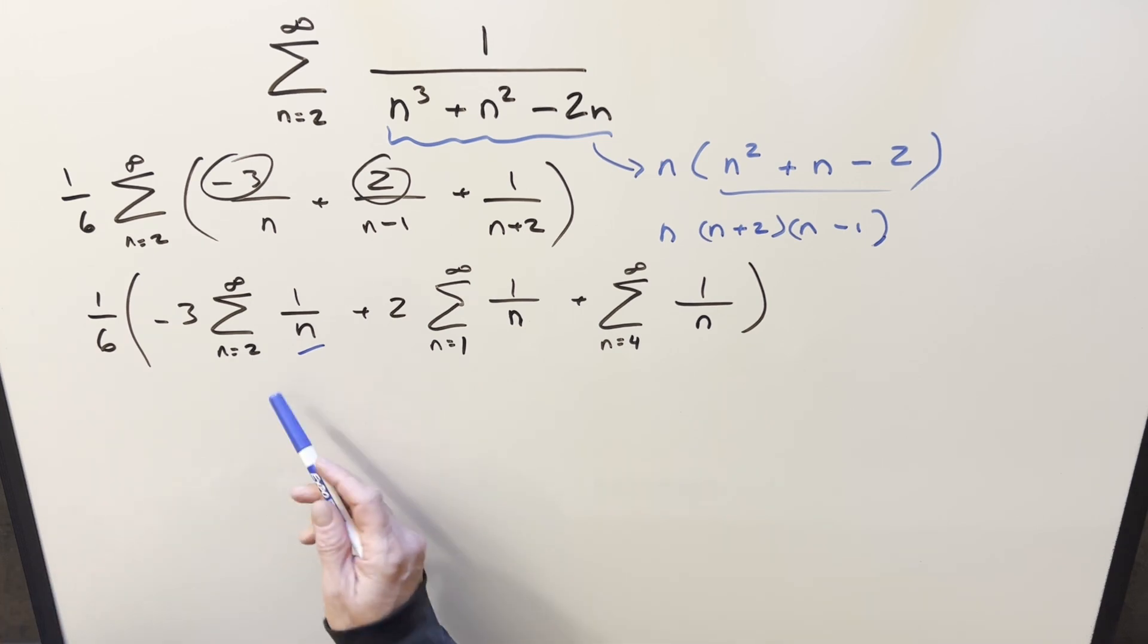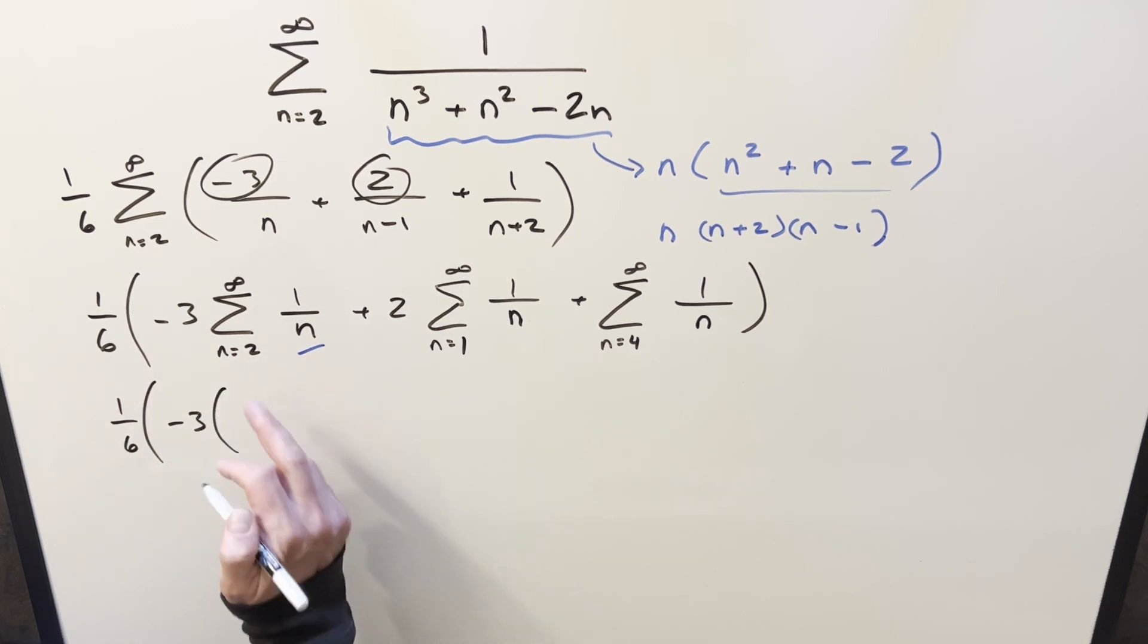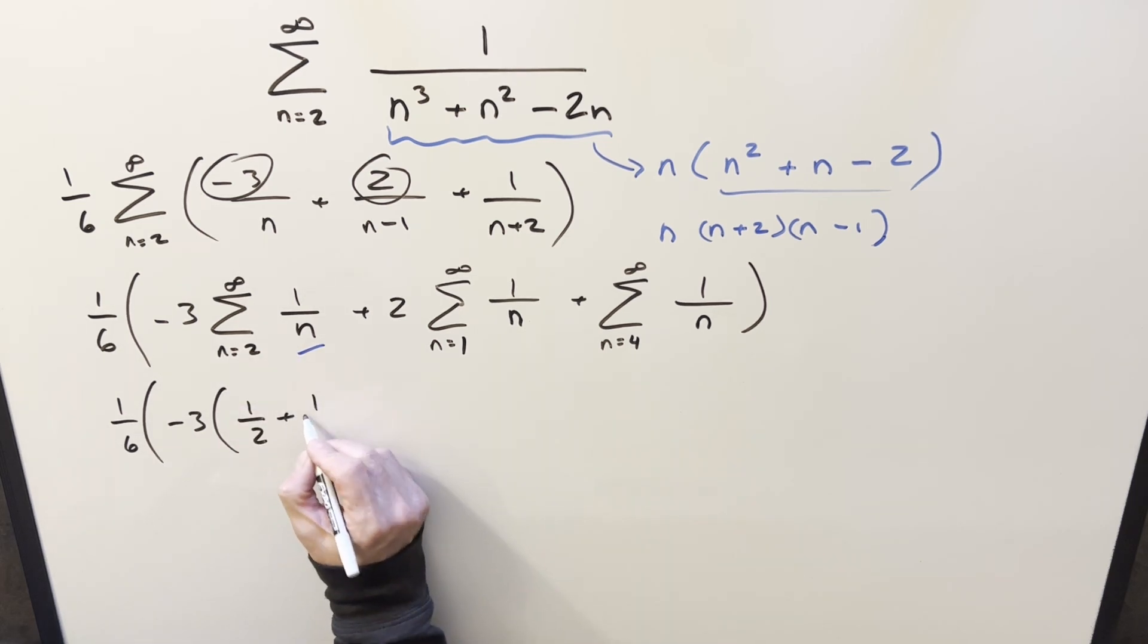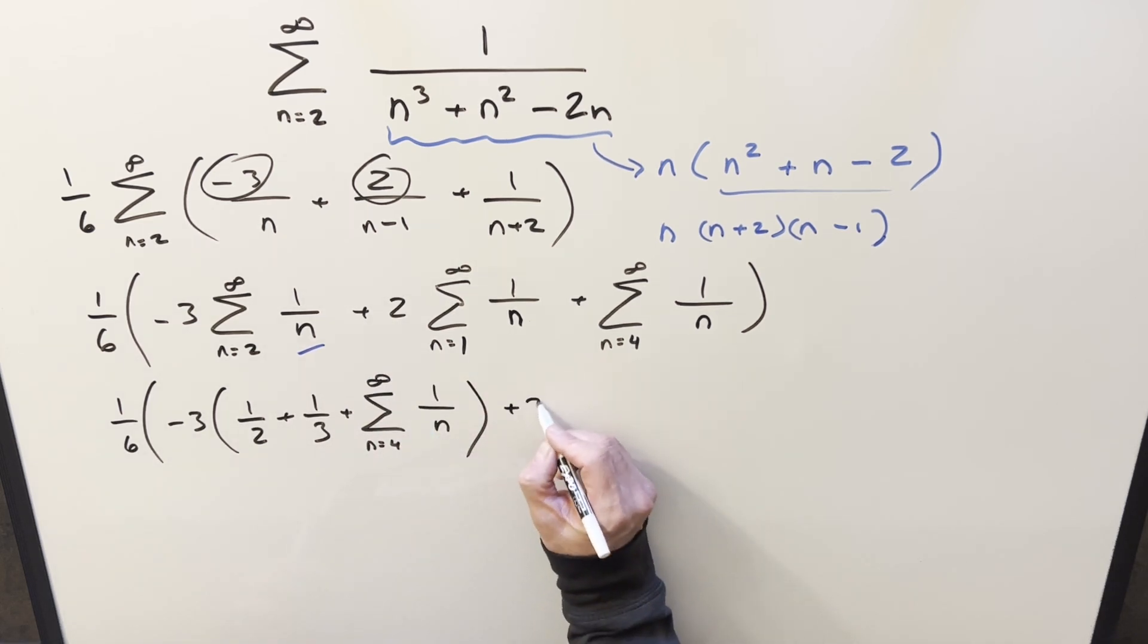And now that we have the same thing in each of these, I'd like to actually just push them all together. But the only problem is the lower bound. I can't really do it when we're starting at 2, 1, 4. And so what I can do is strip out terms in order to get it where we have the same lower bound in each of these. So I'll get everything to n equals 4. So for this one, we'll do the n equals 2 value and the n equals 3 value. When n equals 2, plug in 2, the first term's a half, plug in 3, second term's 1 third, and then now we've got the rest of the sum starting at n equals 4.